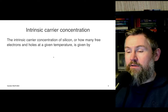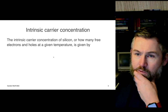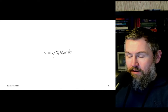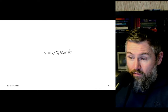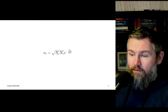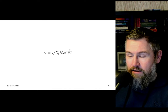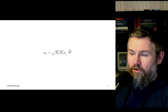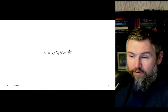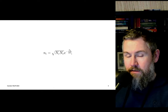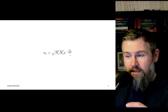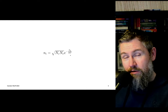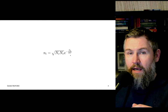The function for intrinsic carrier concentration has it on the left side, and on the right side we have the square root of the density of states - electrons in the conduction band and holes in the valence band - times e to the minus Eg divided by 2kT. If you don't recognize this equation or the 1/kT term, go to the refresher video where I talk about Fermi-Dirac statistics and the Fermi level.